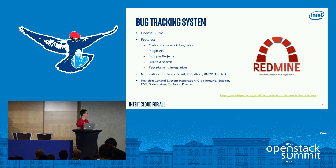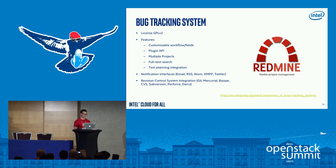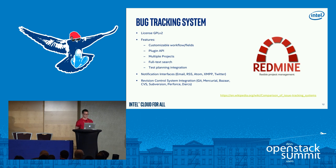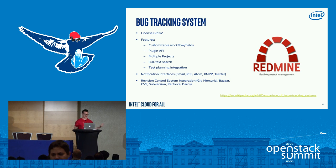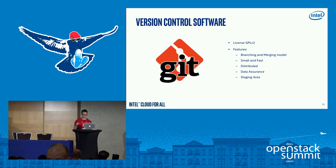For the bug tracking system, we used a Wikipedia comparison article to analyze different options. Redmine offers many features and is newer than some alternatives. The license is GPL version 2. One great thing is that you can configure Redmine to connect with Jenkins. It also supports different notification interfaces such as email, Atom, and XMPP — which you can use with Pidgin — and you can even post tweets from it.